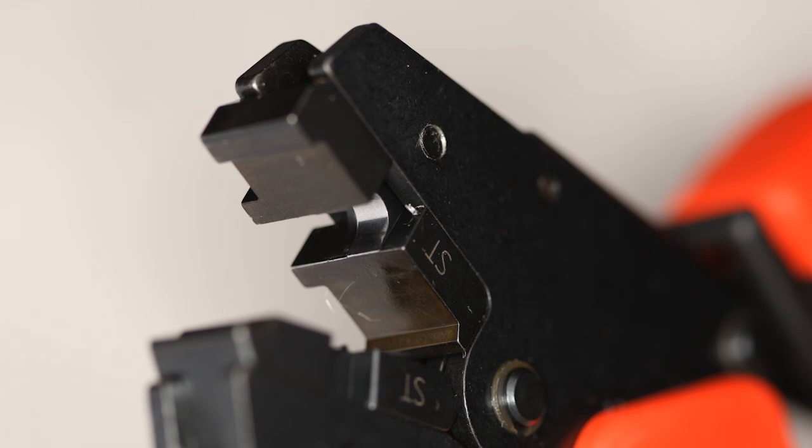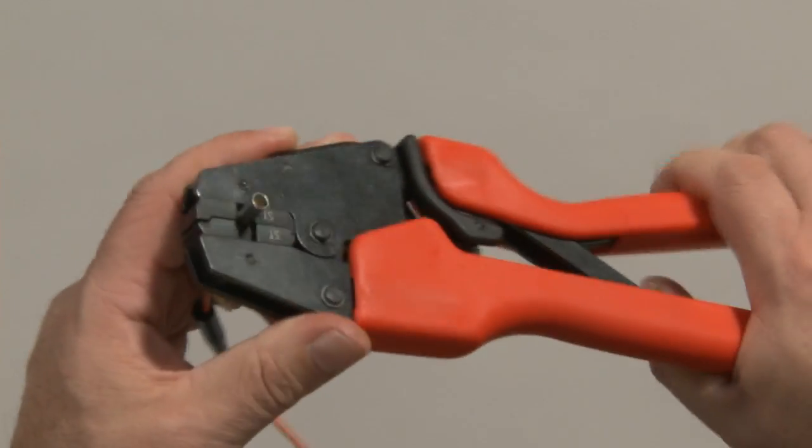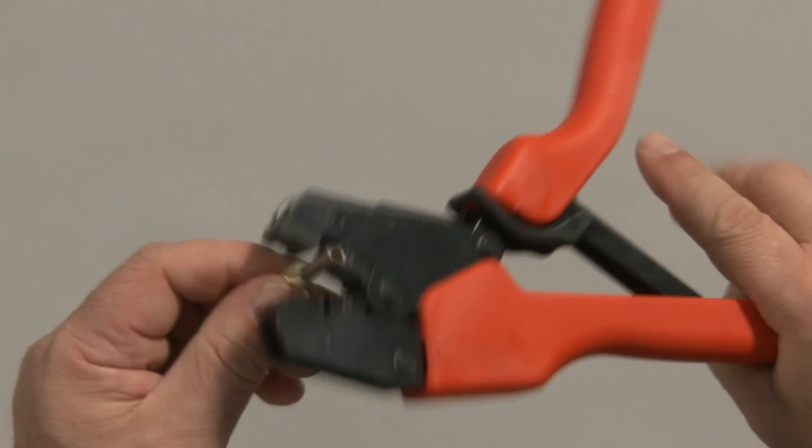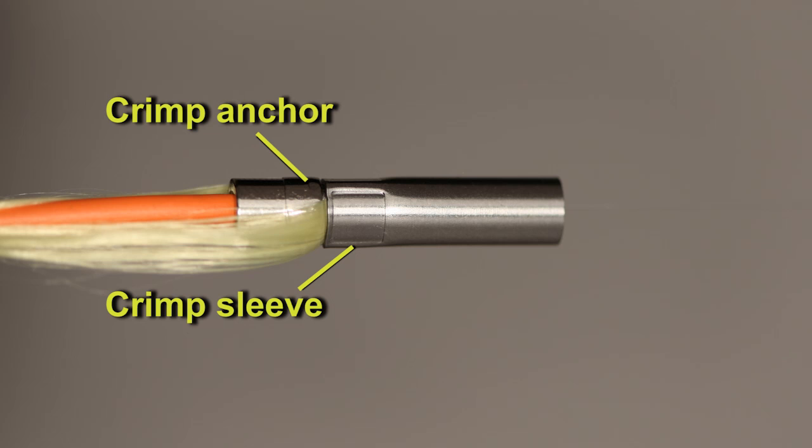Position the crimp sleeve in the tool so that the back edge of the sleeve is aligned with the crimp nest. Squeeze the handles until you hear a click. This will leave a depression on the cable sleeve where it is crimped to the cable anchor.